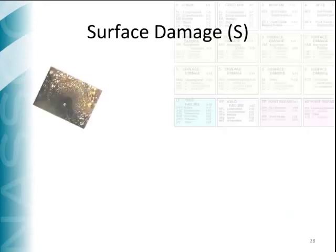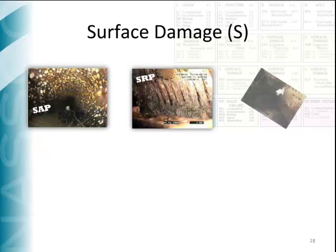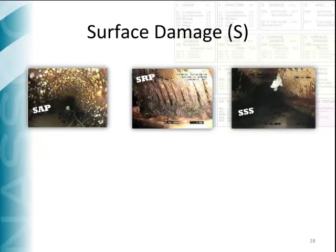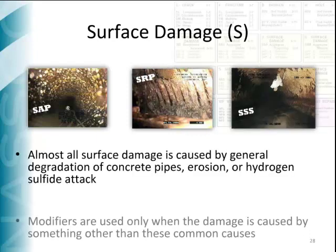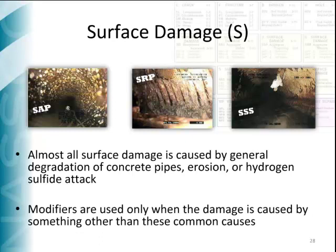The codes related to surface damage follow the normal H2S attack progression, beginning with roughness increased to missing wall. Surface spalling, corrosion, and others are additional defect codes within this group. In most cases, surface damage is caused by general degradation in concrete pipes, such as degradation caused by erosion or hydrogen sulfide attack. See three examples of surface damage at the top of this slide — from left to right: surface aggregate projecting, surface reinforcement projecting, and surface spalling.